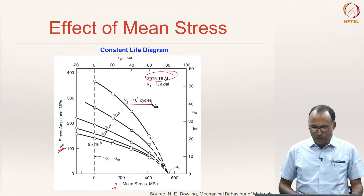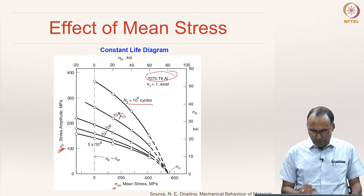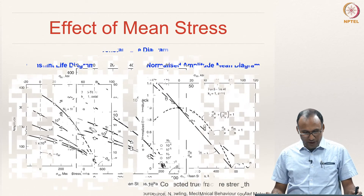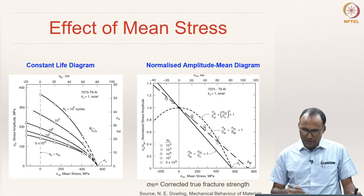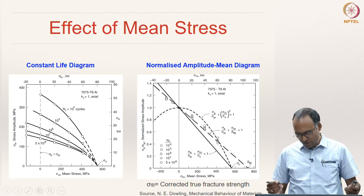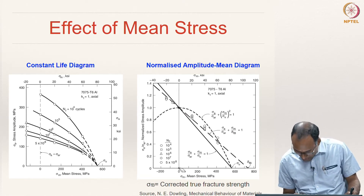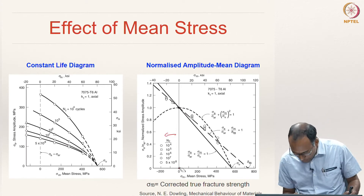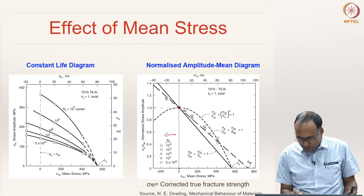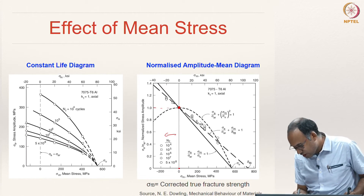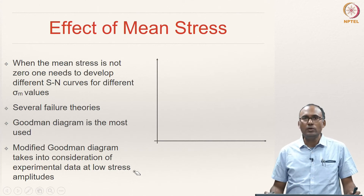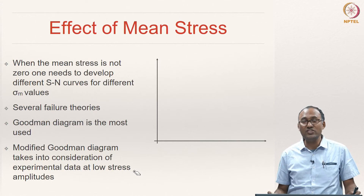This line corresponds to 10^4 cycles, 10^5 cycles, 10^6 cycles, and so on. If I normalize my stress amplitude with the ultimate strength of the material, you can see that for positive mean stress — we are only focusing on positive mean stress in this class — when normalized with ultimate strength, these curves sort of show a straight line. Hence I can now discuss different kinds of failure surfaces for a constant life.